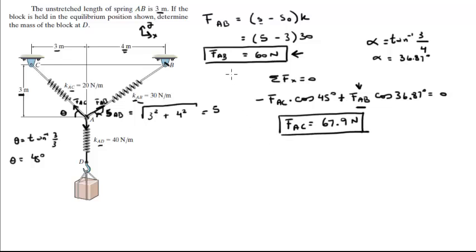Now that we have FAB and FAC, you know that the sum of the forces in the Y is equal to 0 in equilibrium. Therefore, you just look at this diagram right here and you can easily find FAD. That's what we're looking for.